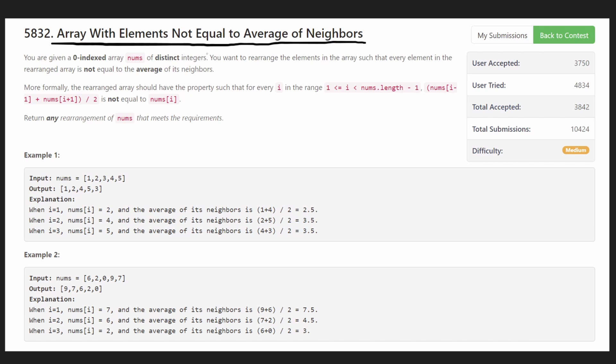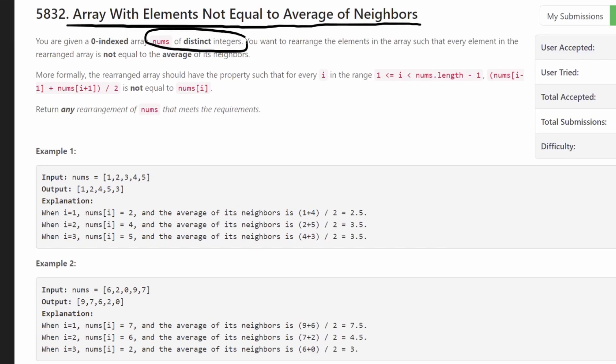So today let's solve the problem array with elements not equal to the average of its neighbors. We're given an array of distinct integers and we just want to rearrange the values in that array such that any particular value in the array such as 3 is not equal to the average of its neighbors. In this case, given this input array,